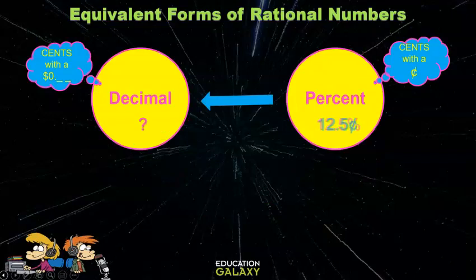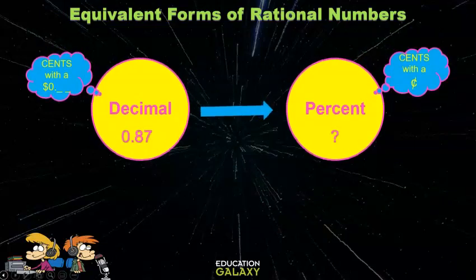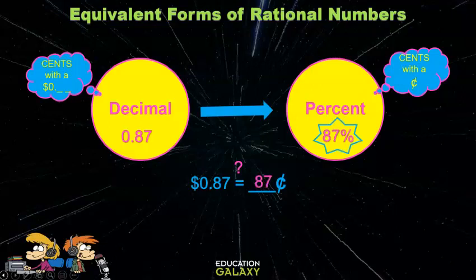And to write twelve and a half percent as a decimal, think, how would I write this much cents with a dollar sign? It's easier to think about twelve cents first, and then tack on the five. And to write zero point eighty-seven as a percent, put a dollar sign in front and read it. This is eighty-seven cents, so it's eighty-seven percent.